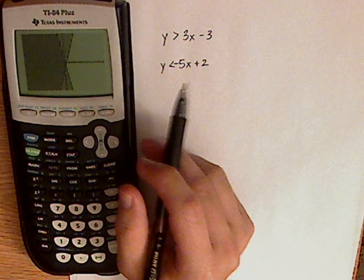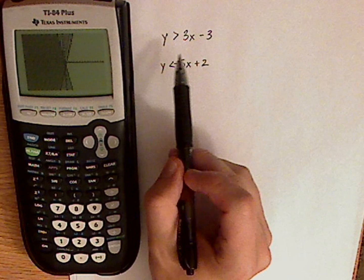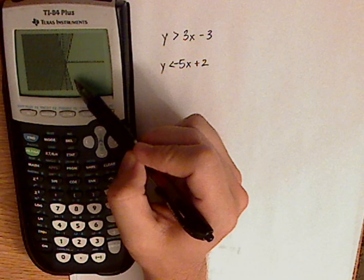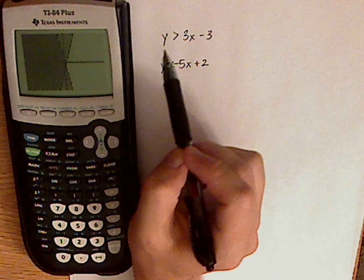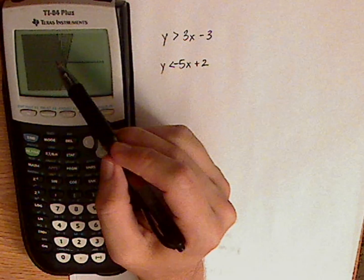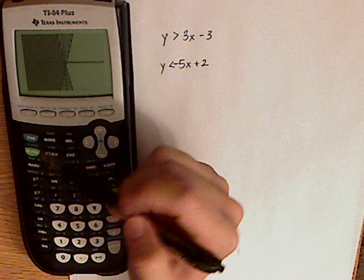If it turns out that's an or statement, if there's an or in between these, then it's going to be everything that's shaded in. If it's an and, it's going to be the darker region where you have the overlap. And that's it.